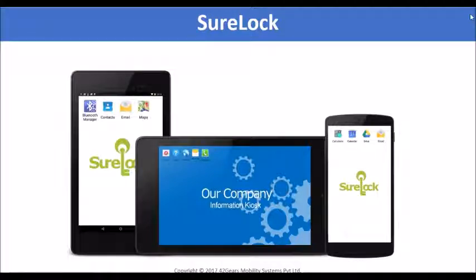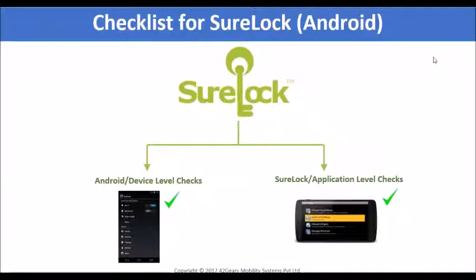To achieve the most secure lockdown, I have broadly classified all important checkpoints into two major categories. The first one is device or Android level checks. The second one is application or Sherlock level checks. I'll first discuss the Android level checks and then proceed with Sherlock level checks.